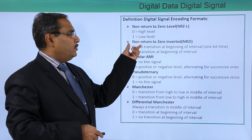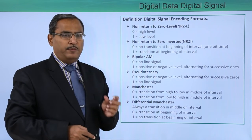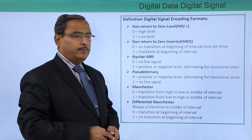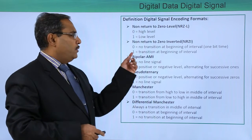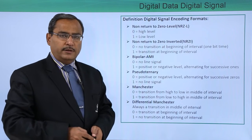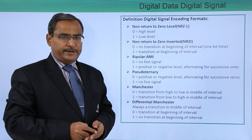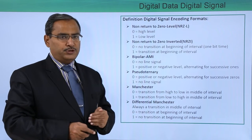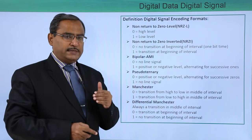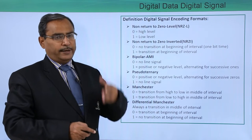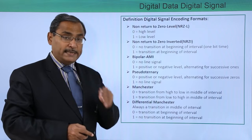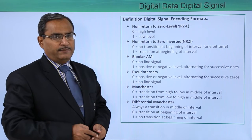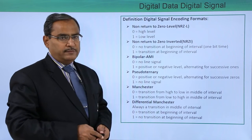Next is Non-Return to Zero Inverted, abbreviated as NRZ-I. In NRZ-I, 0 means no transition at the beginning of the interval (one bit time), and 1 means transition at the beginning of the interval. Transition means if the signal was at voltage level 1, it will come to 0; or if it was at voltage level 0, it will go to level 1. So 0 means no transition at the beginning, and 1 means transition at the beginning of the interval.